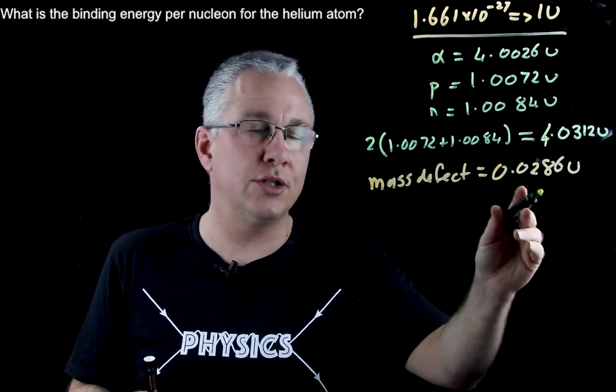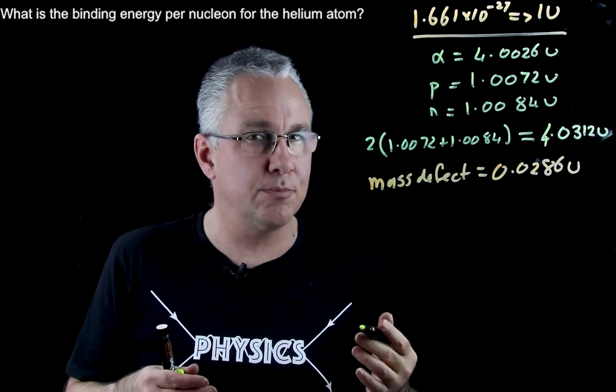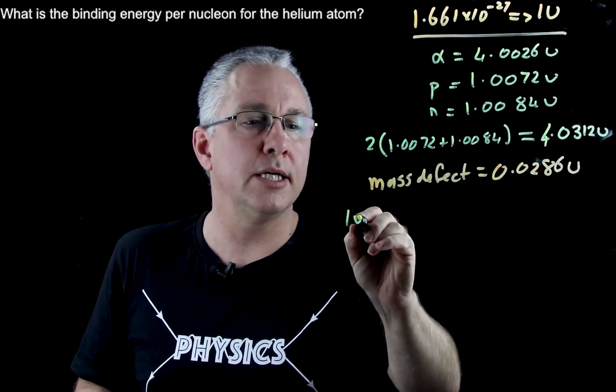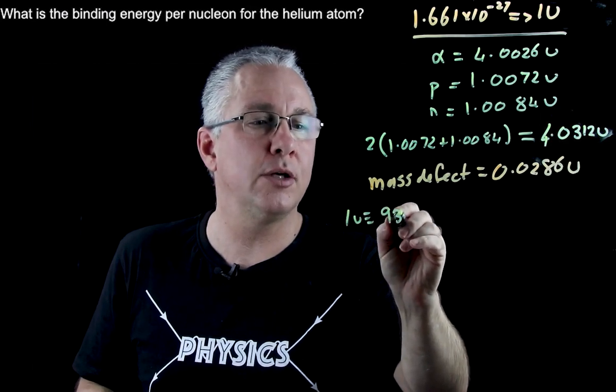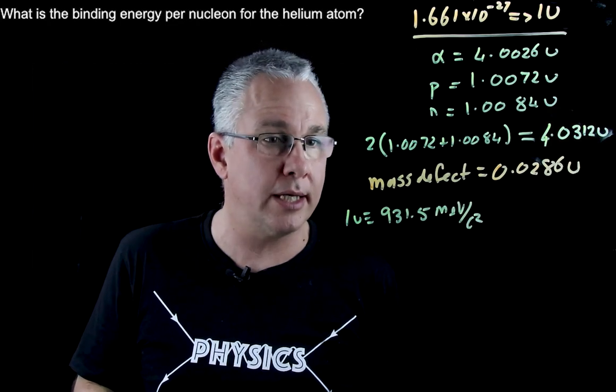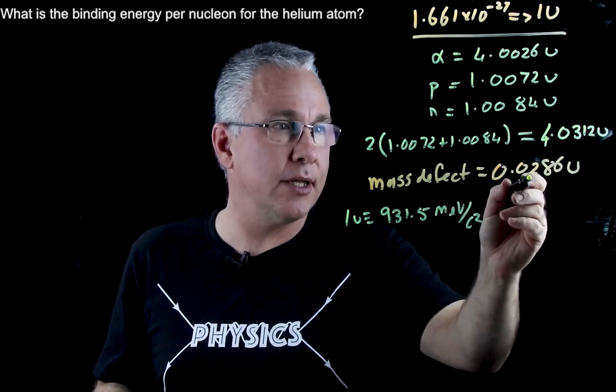But we can now also change this unit to mega electron volts per c squared. And since 1u is equivalent to 931.5 mega electron volts per c squared, when I multiply that out,